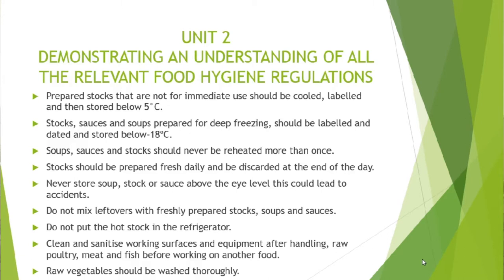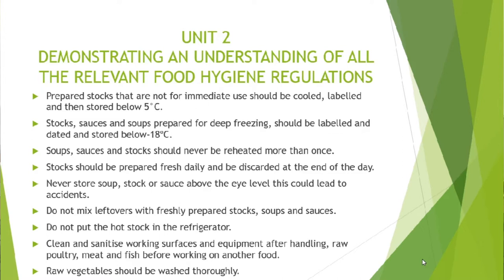Unit two covers demonstrating and understanding all the relevant food hygiene regulations. Number one, prepared stocks that are not for immediate use should be cooled immediately and stored in the refrigerator below five degrees Celsius. You can also store stocks in the deep freezer at a required temperature of minus 18 degrees Celsius. Soups, sauces and stocks should never be reheated more than once — you reheat them just once.